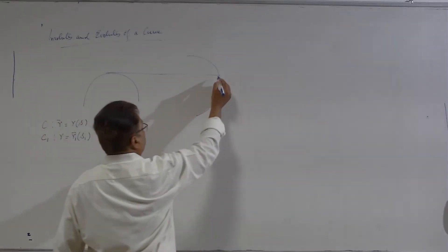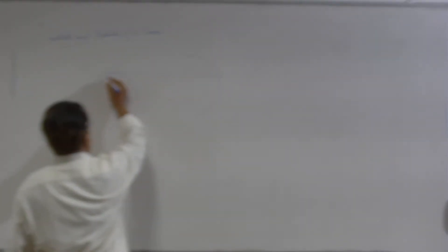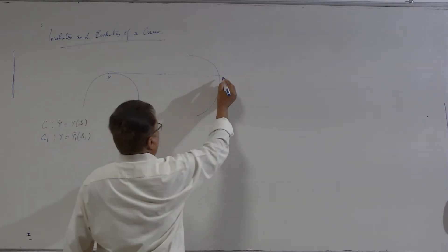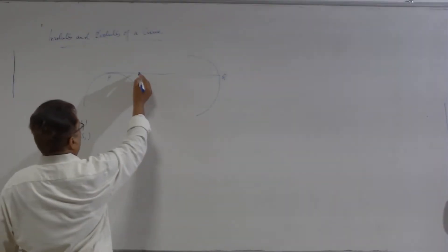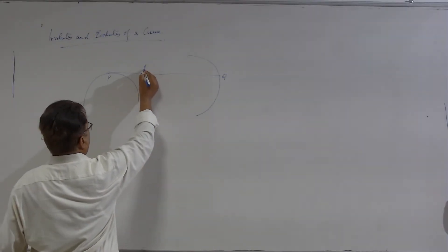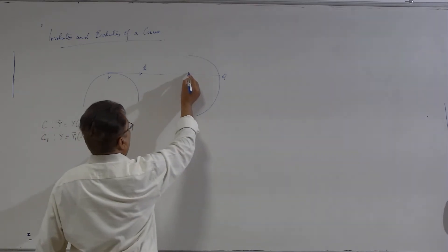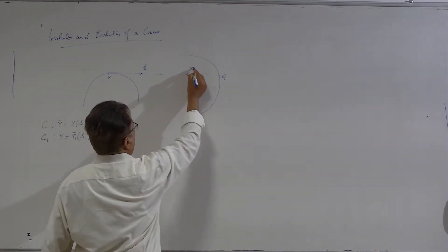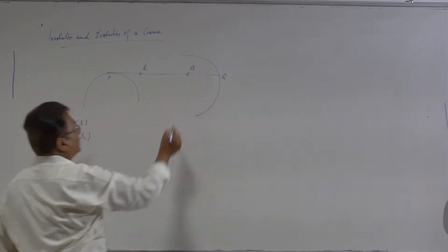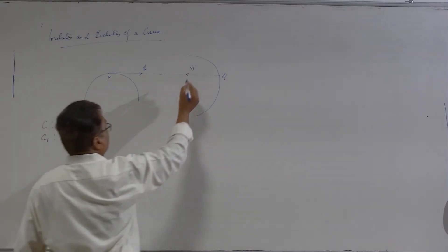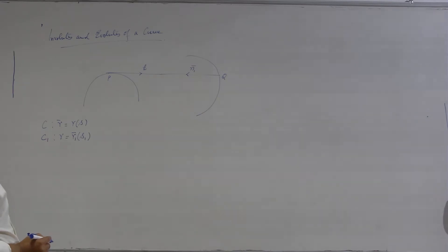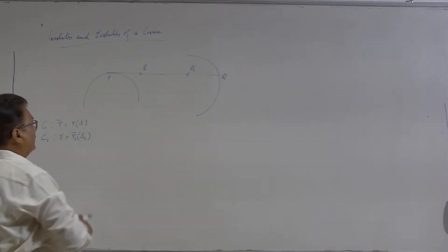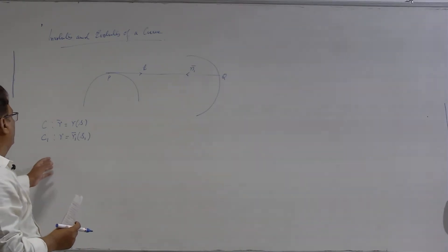If I take a point P on the first curve, it corresponds to a point Q on the second curve, and the relationship is that the tangent to the first curve C is in fact the principal normal of the second curve. Two such curves — C1 will be called the envelope of the curve C.